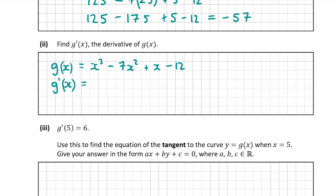Now let's try the actual question. Differentiating g of x: first, differentiate x cubed — bring the 3 to the front and reduce the power by 1, giving 3x squared. Then differentiate minus 7x squared — bring the 2 to the front and multiply by minus 7: 2 times minus 7 is minus 14. The x stays, and reducing the power by 1 gives x to the power of 1, which is just x. So we have minus 14x.